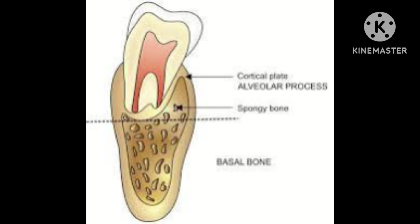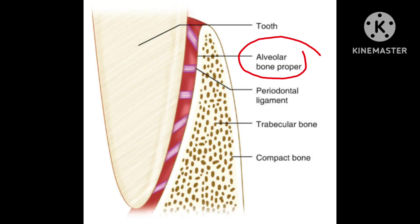The alveolar bone proper is composed of dense cortical bone and is present as a thin lamella of bone surrounding the root. It lines the alveolar socket, and its function is to provide stability and attachment for the teeth by anchoring periodontal ligament fibers. These fibers are located between the bone and the cementum of the tooth and are connected by tough fibers called Sharpey's fibers.